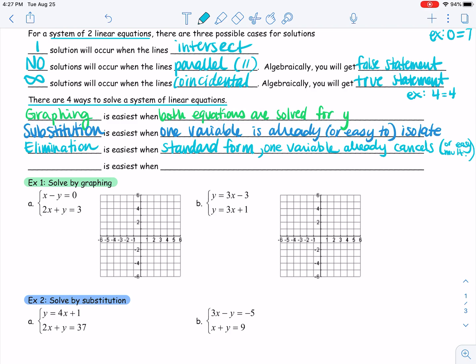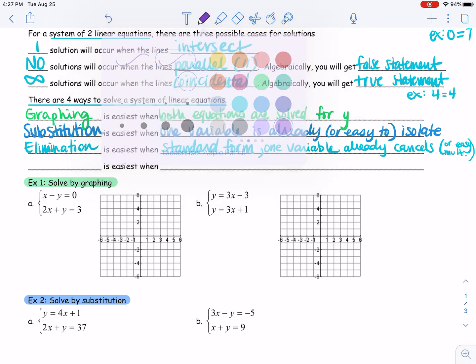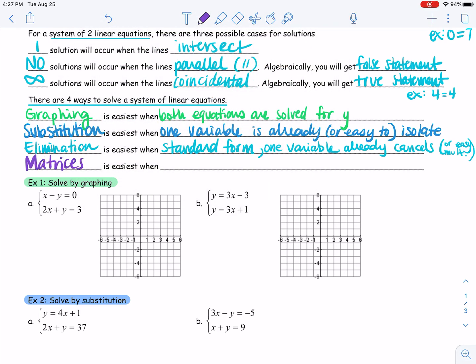There actually is one more way that we can solve a system of linear equations. You may have learned it in algebra one, you may not have. And that's going to be matrices. Matrices are easiest when we have messy three variable systems. We're not even going to touch on matrices today because today we're only dealing with two by two systems. Graphing, substitution, elimination is where it's at for that. Matrices, we will get into later on when we do dive into those three by three systems. Most of the time, we'll let the calculator do all the work for us then.